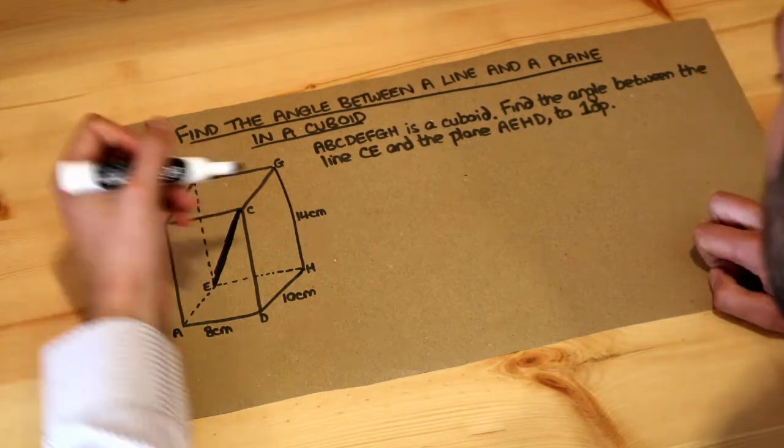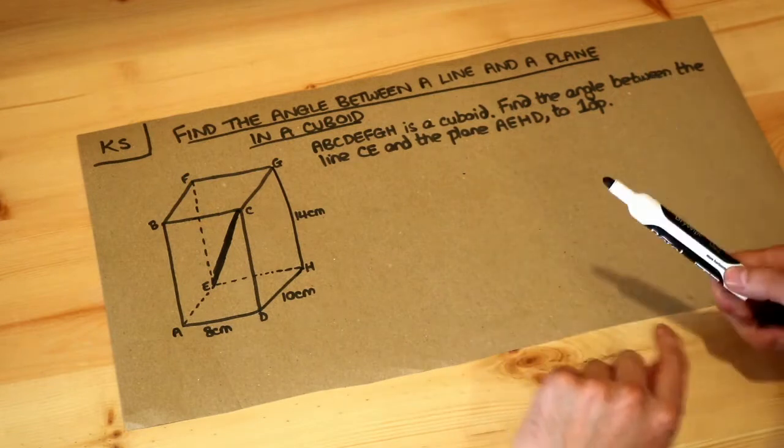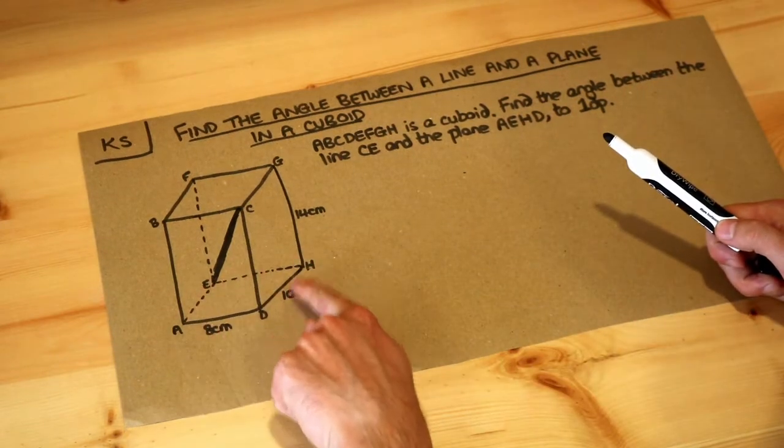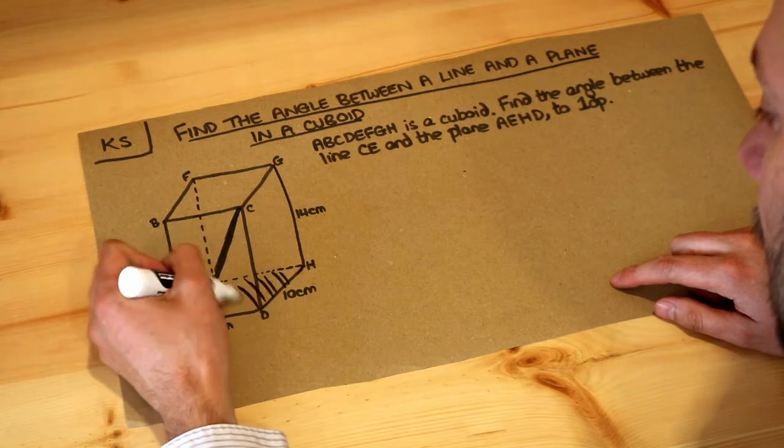So it's this line CE and the plane AEHD. Now remember, a plane is just a flat surface, so AEHD is that rectangle, this plane here, this flat surface here.